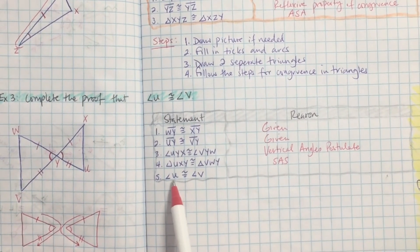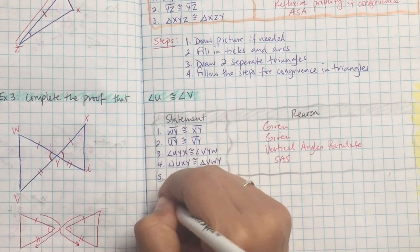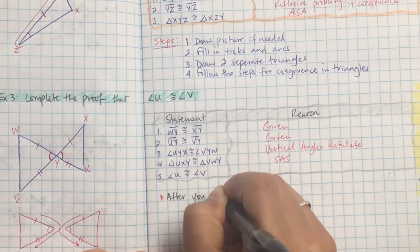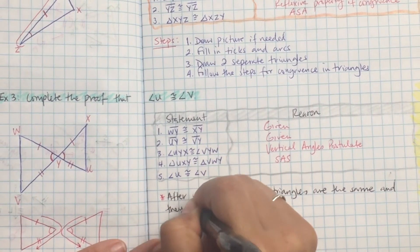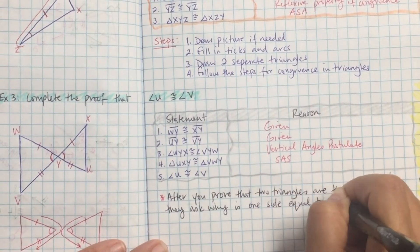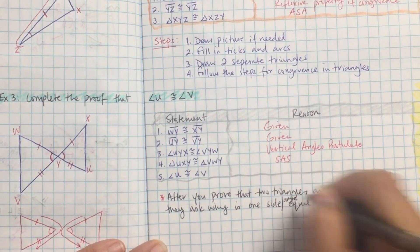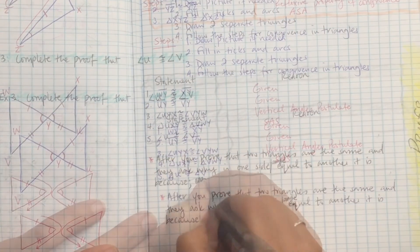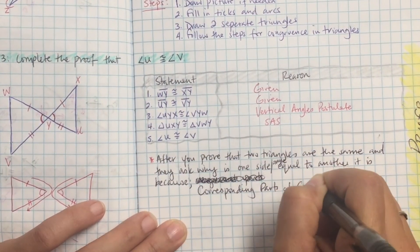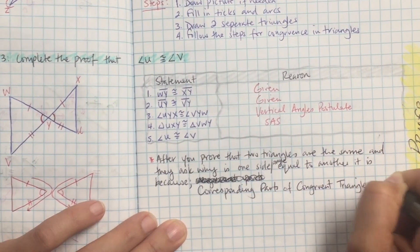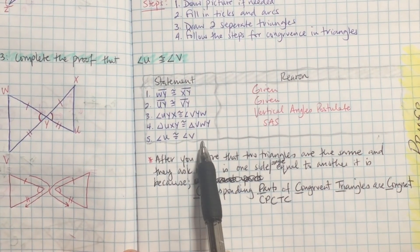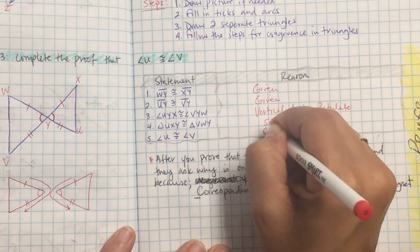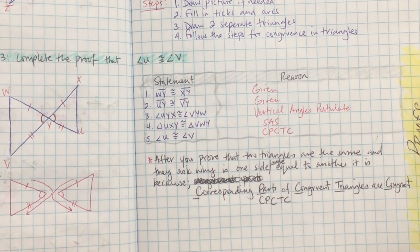Anytime they ask you why one side or angle is congruent to another after you've proven two triangles are congruent, the reason is: corresponding parts of congruent triangles are congruent — CPCTC. If two triangles are exactly the same, each angle matches each angle and each side matches each side. After proving triangles congruent, any further question about sides or angles is answered with CPCTC. The only way to get good at this is to practice.